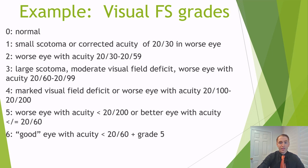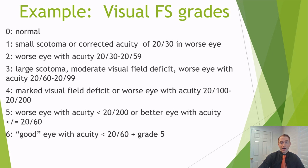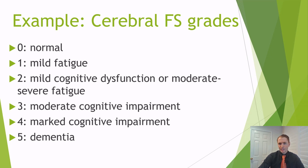Grade 3 can also mean the worst eye has visual acuity of 20/60 to 20/99. Grade 4 would be a marked visual field deficit, such as not being able to see to one side, or the worst eye has acuity of 20/100 to 20/200. Grade 5 would be the worst eye has acuity worse than 20/200 — in other words, legally blind in that eye — or the better eye has acuity less than or equal to 20/60. Grade 6 essentially means blind in one eye and the good eye is worse than 20/60.